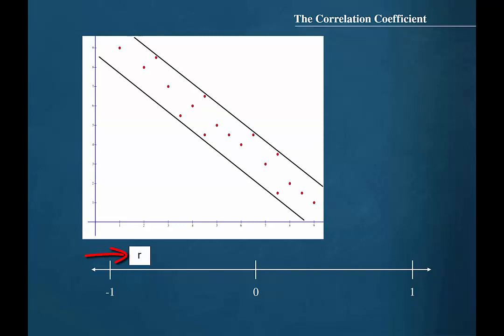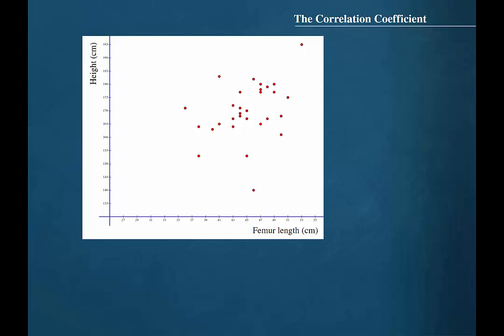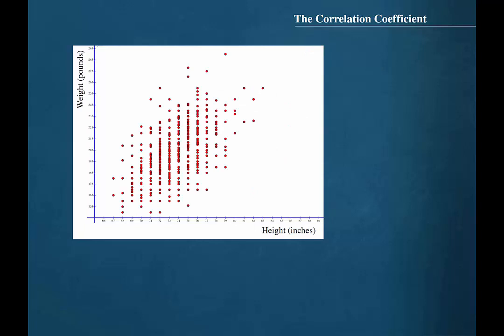Again, when this variation increases and the band that captures the scatter plot becomes wider, the value of r begins to approach 0. This scatter plot shows the relationship between the length of the femur in centimeters and height in centimeters for a sample of adults. Although there is quite a bit of variation in this data set, the majority of the points appear to have somewhat of a positive linear relationship. The linear correlation coefficient for this data set is r equal to 0.363.